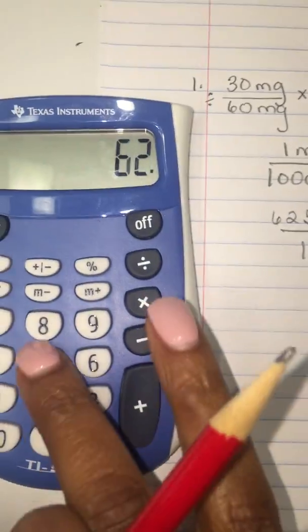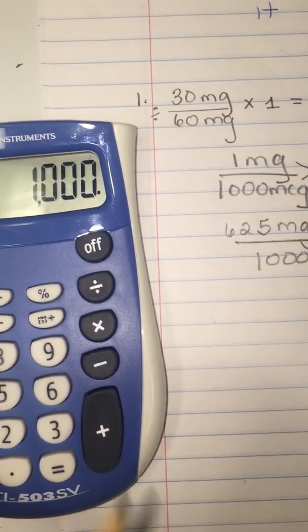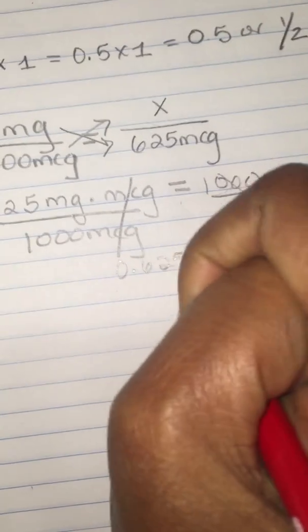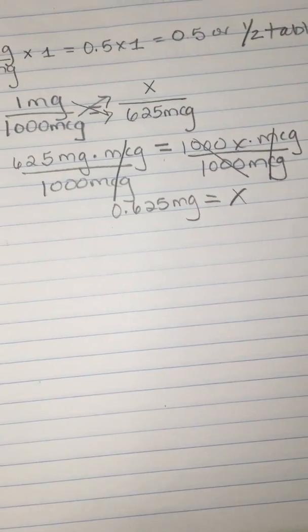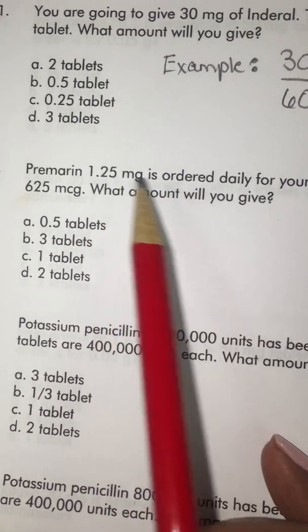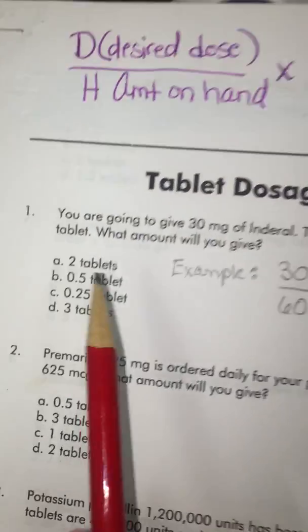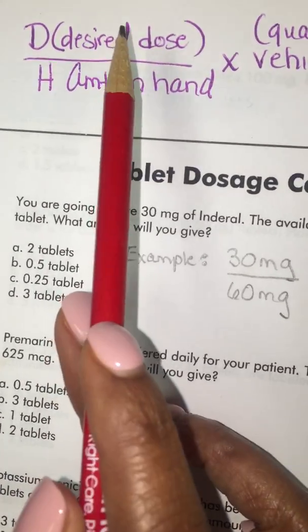So 625 divided by 1,000 equals 0.625 milligrams. Are we finished? No, because now we know what the milligrams are. Now we need to put it divided by each other with the desired dose, because this is what was ordered. The doctor ordered this, so there is the desired dose compared to what the hospital has, what they prescribed.